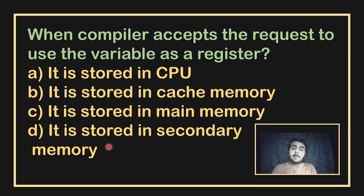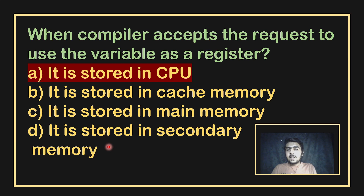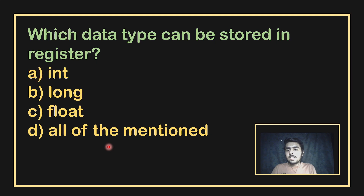When does the compiler accept the request to use a variable as a register? It will accept when the variable is stored in the CPU register. If it is in memory, then the request may not be accepted.